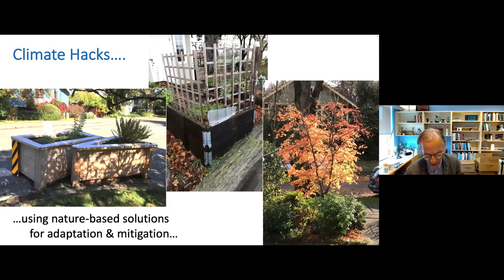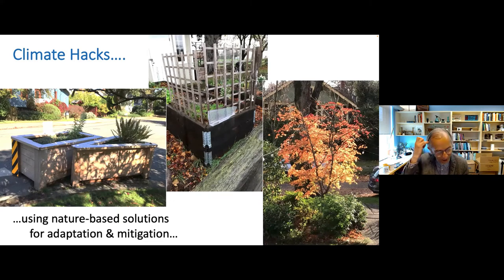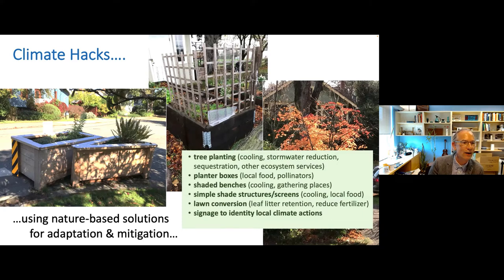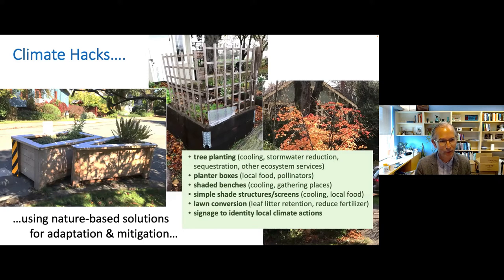Climate hacks refer to really simple nature-based actions and activities that can be taken at a community level — which when aggregated truly can be effective tools for climate mitigation and adaptation. Simple examples include tree planting, which has impacts on cooling cities, stormwater reduction, and carbon sequestration; planter boxes for local foods and pollinators; shaded benches for gathering places and cooling; simple shade structures and screens for cooling and growing local foods; lawn conversion for leaf litter retention to reduce water and fertilizer use; or signage to identify local climate actions.